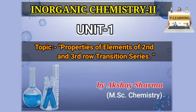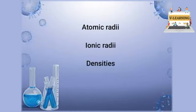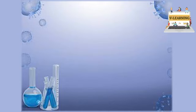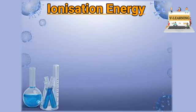In the previous lecture we discussed atomic radii, ionic radii, densities, and learned about melting and boiling points for the 2nd and 3rd transition series. And now we discuss about the trends for ionization enthalpies shown by these elements. As you know, ionization enthalpy or ionization energy of the outermost shell.